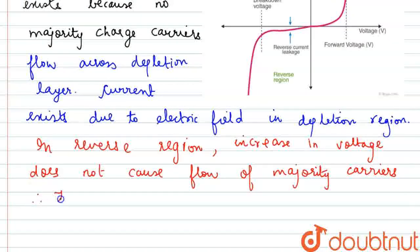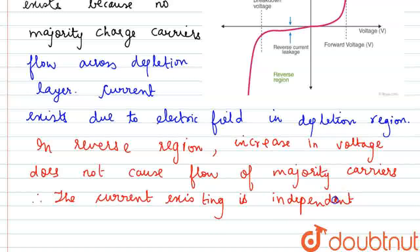Therefore, the current existing is independent of external voltage.